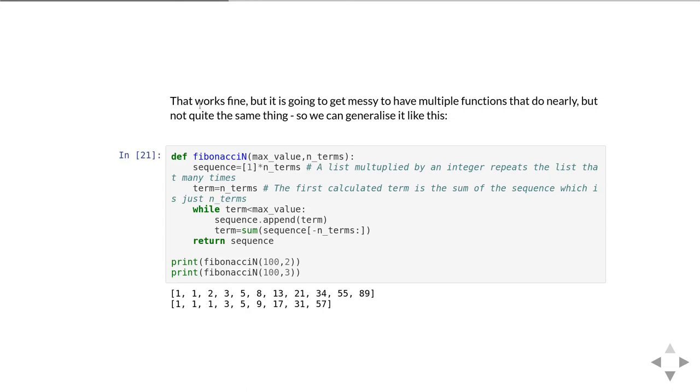Now we can test that code by calling it with a max number, in this case of 100, and then 2 for the number of terms, and then again doing the same but for 3 for the number of terms. You can see that what it produces as a result is in the first line the standard Fibonacci sequence, and in the second line it's doing the same as our Fibonacci 3 function just did. We get just a much shorter sequence but it is the sum of the last three terms.